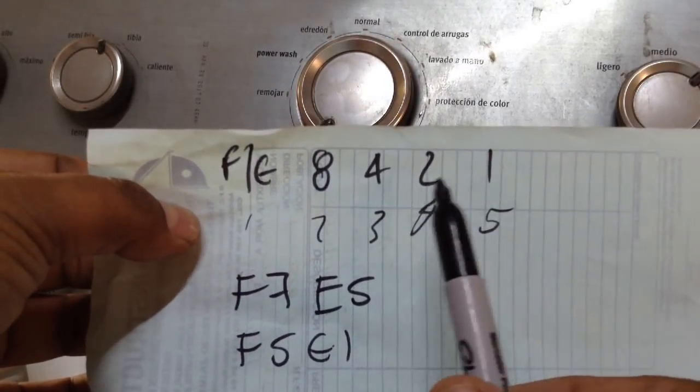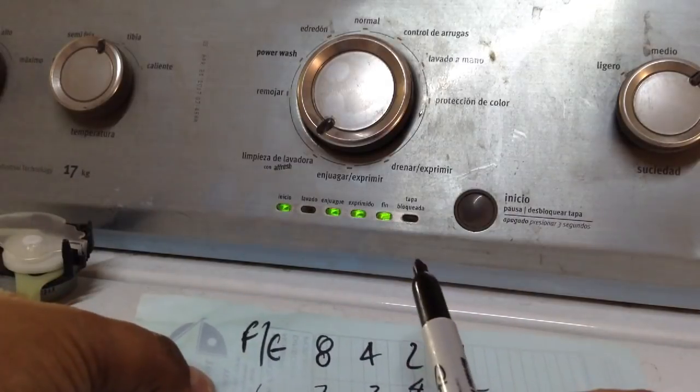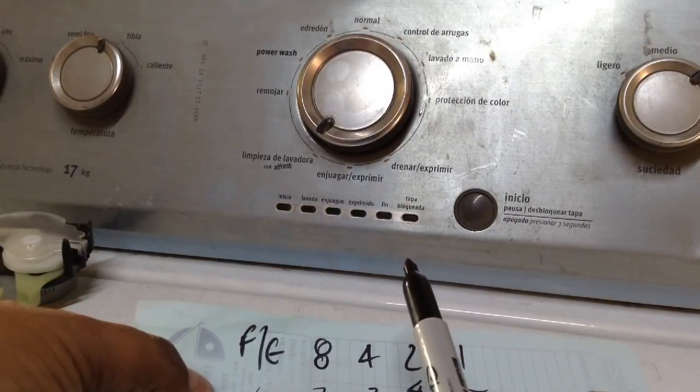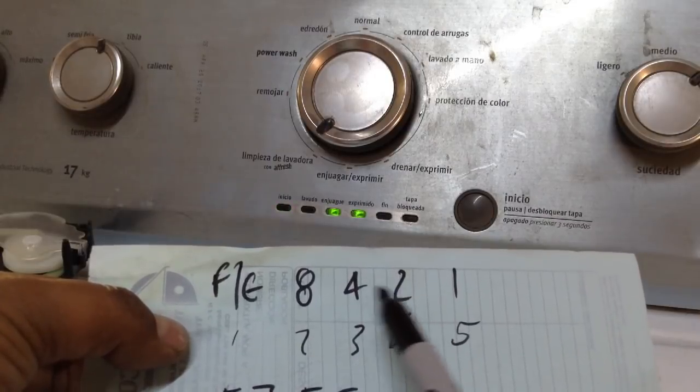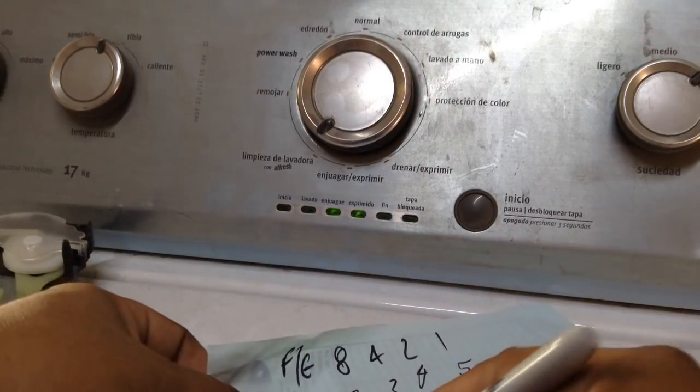Vamos a ver si hay un inmediato anterior. Efectivamente hay un inmediato anterior. Igual es F7 E6. Porque enciende F y los 3 últimos 4, 5, 6, 7. Y E con estos, estos dos. 6. Entonces es F7 E6.